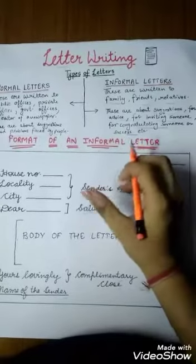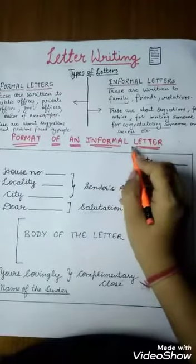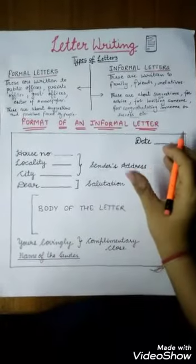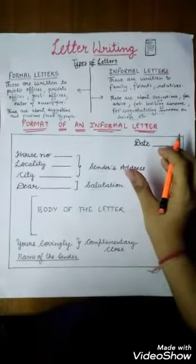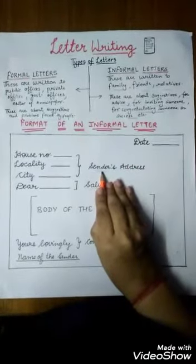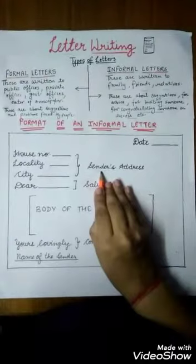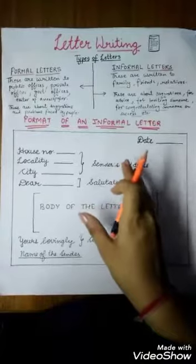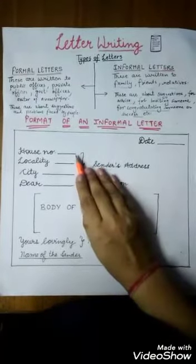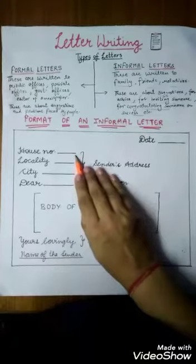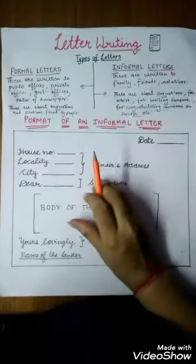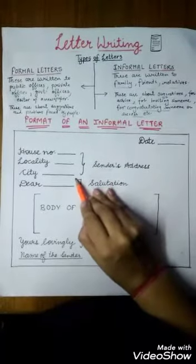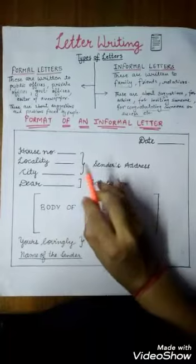Now let's discuss the format of an informal letter as given in your book. At first you will write down the date on which you are writing the letter. After that you will write down the complete address of the sender. The complete address means you will write down the house number, locality — which is the street name or the area name where you live — and after that you will write down the city where you belong.